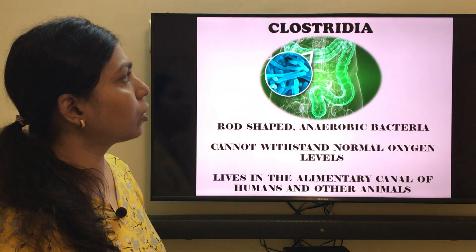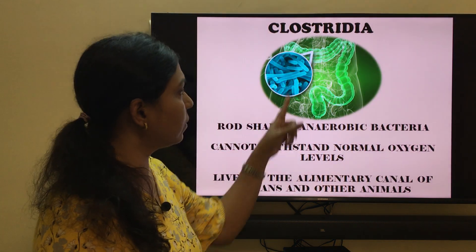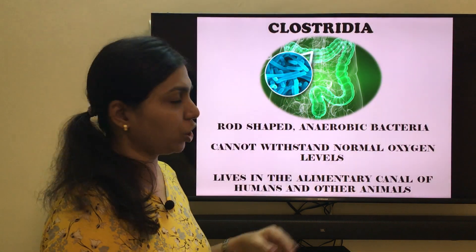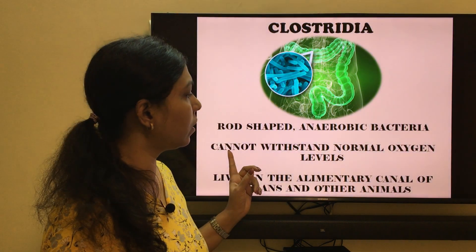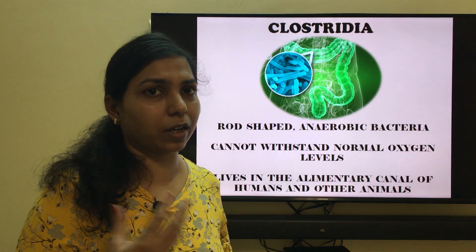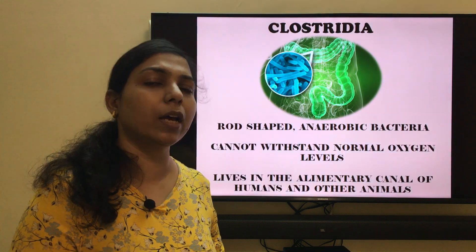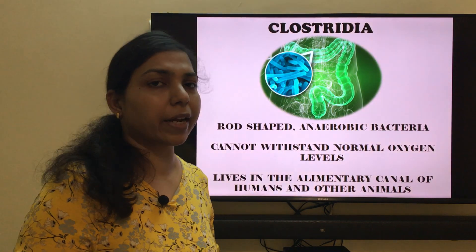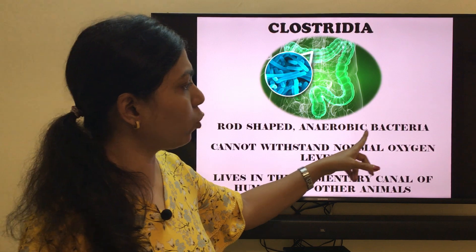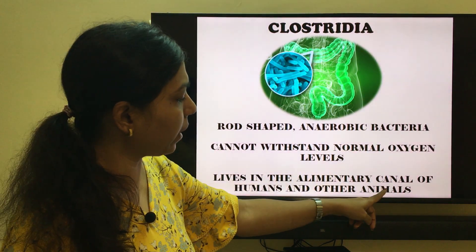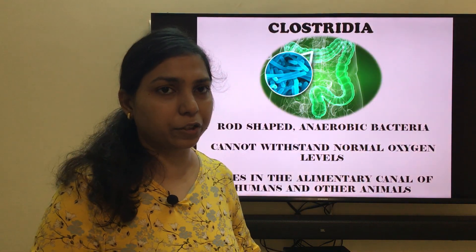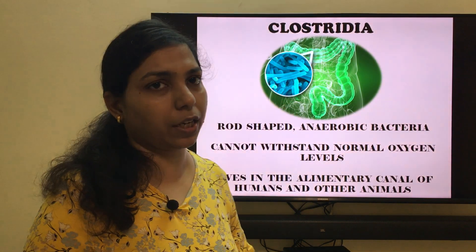The next harmful microorganism is clostridium. Under the electron microscope, clostridium appears rod-shaped or rectangular. These are anaerobic bacteria, meaning they cannot withstand normal oxygen levels — if oxygen is present around them, they start dying, but they can survive without oxygen. Clostridium lives in the alimentary canal of humans and other animals, specifically in the small intestines and large intestines.